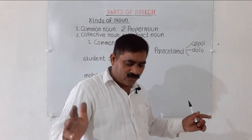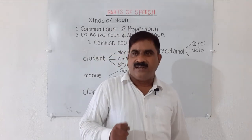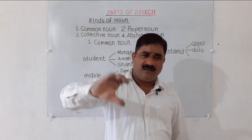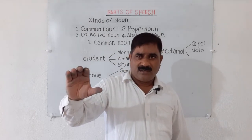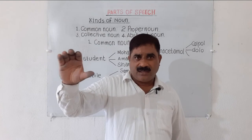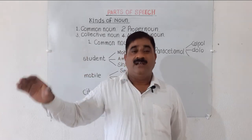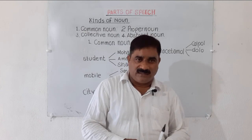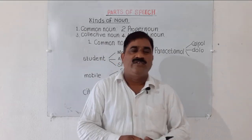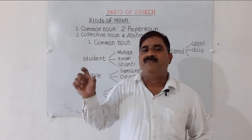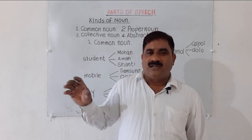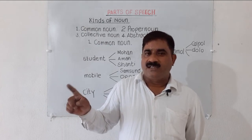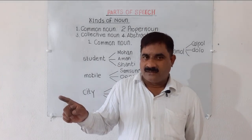Are you getting it? Common noun is very easy to understand. Common noun is a generic name. For example, 'doctor' is a generic name for different names having the same profession — Doctor Reddy, Doctor KK Mathur, Doctor Ansari. They are all doctors. So a common noun is a generic name for person, place, and thing. Isn't it? Are you getting my point?